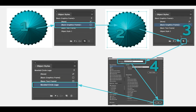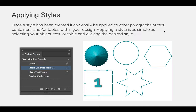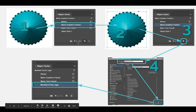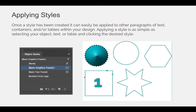The new style icon — a piece of paper with a corner turned up — means 'new'. On the swatches panel it creates a new swatch; on the object styles panel it creates a new object style. As soon as I clicked new style, it created 'object style 1'. Notice that even though object style 1 now exists, my selection is still linked to basic graphic frame. I then double-clicked object style 1, which launched the object styles dialog box. In there I gave it a new name: 'beveled circle logo'. As soon as I clicked OK, that same object was now linked to the beveled circle logo style.